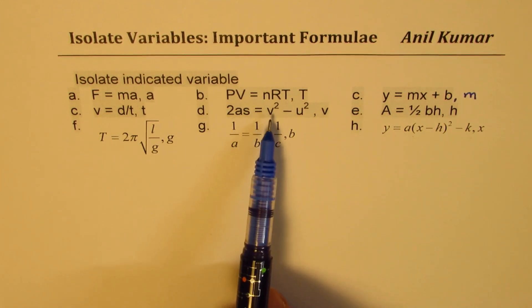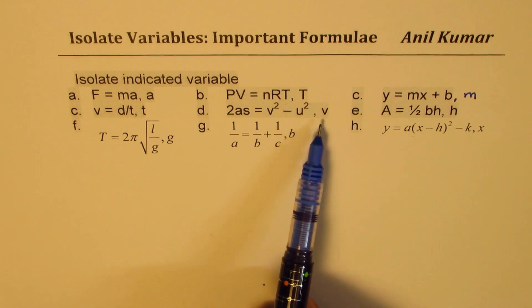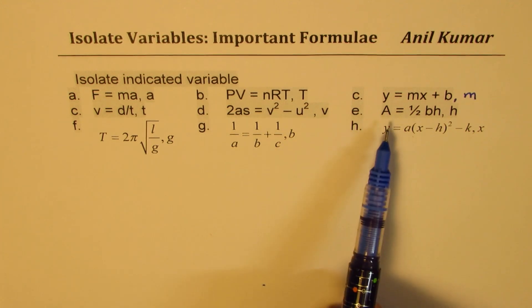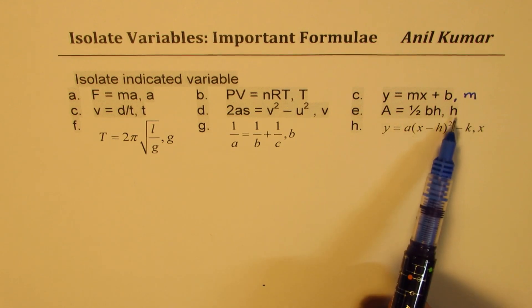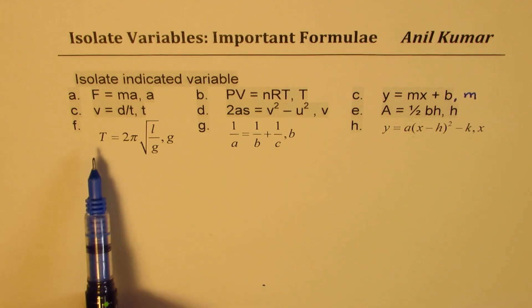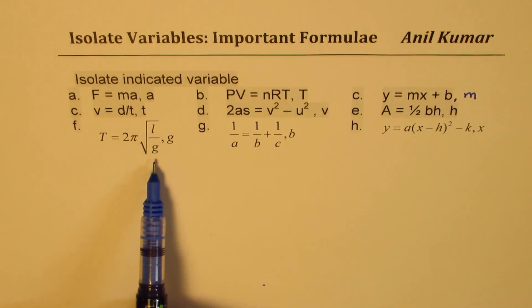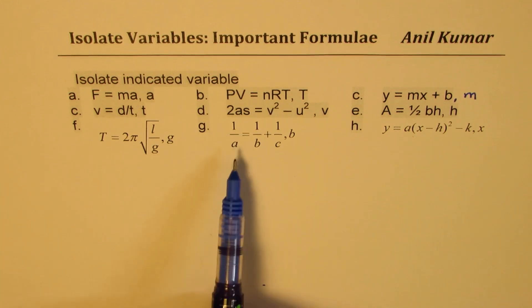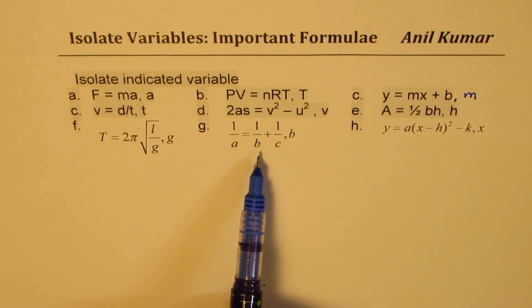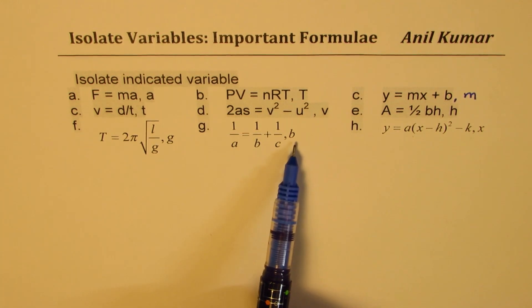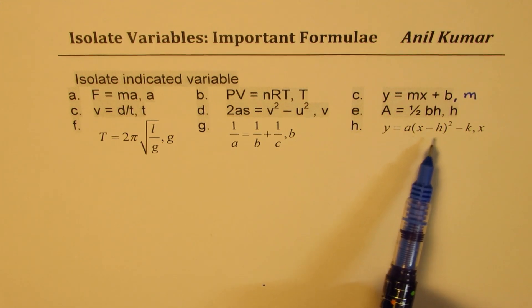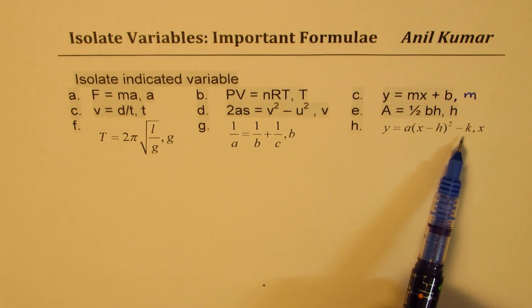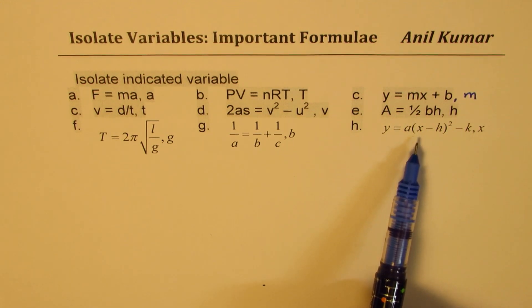2as equals to v squared minus u squared, find what v is; a equals to half base times height, find height; t equals to 2π square root of l over g, isolate g; 1 over a equals to 1 over b plus 1 over c, isolate b. And the last question is y equals to a times x minus h whole square minus k, find what x is.